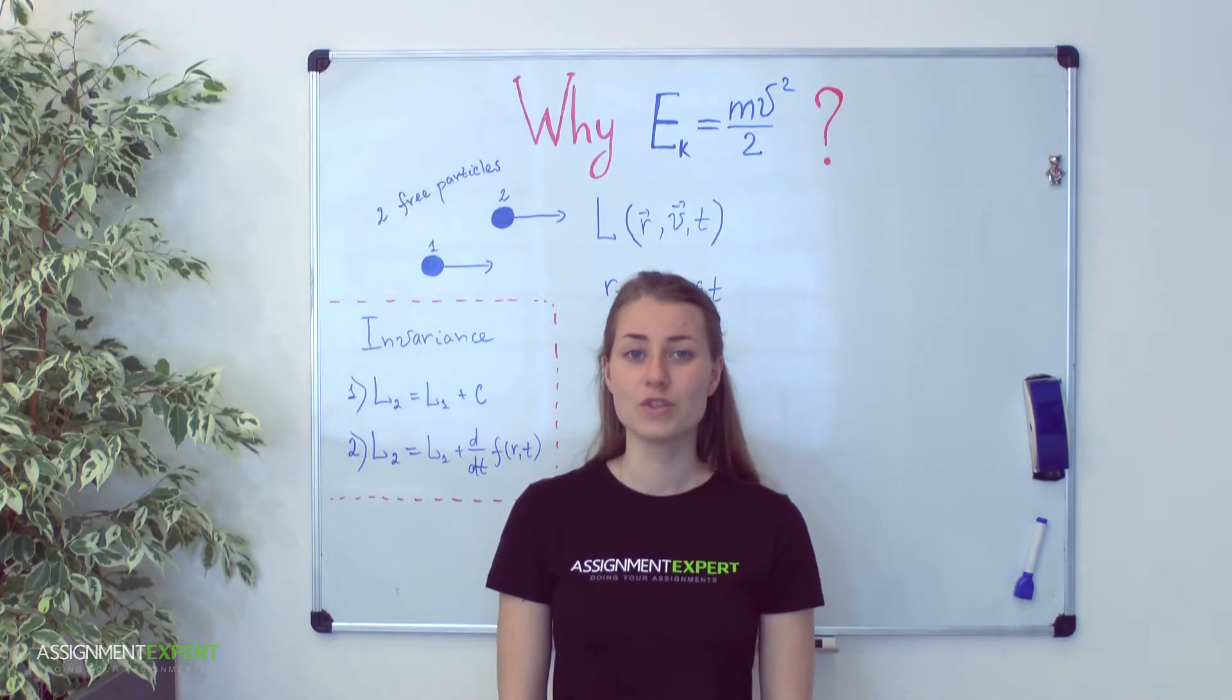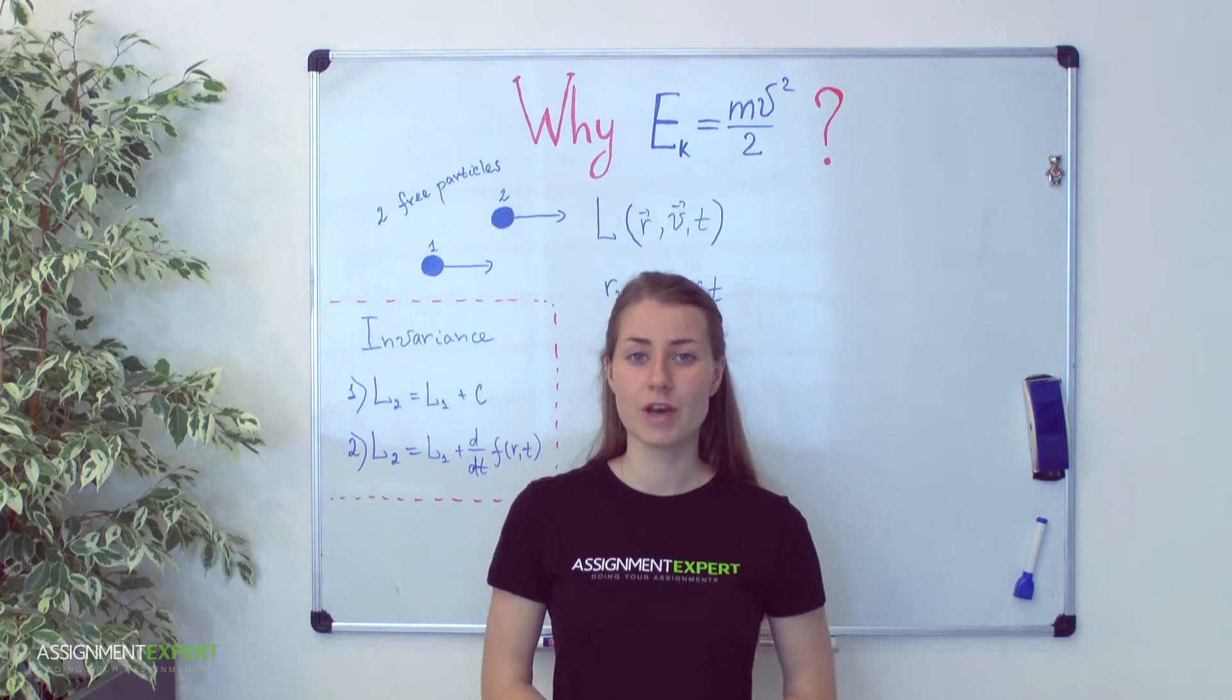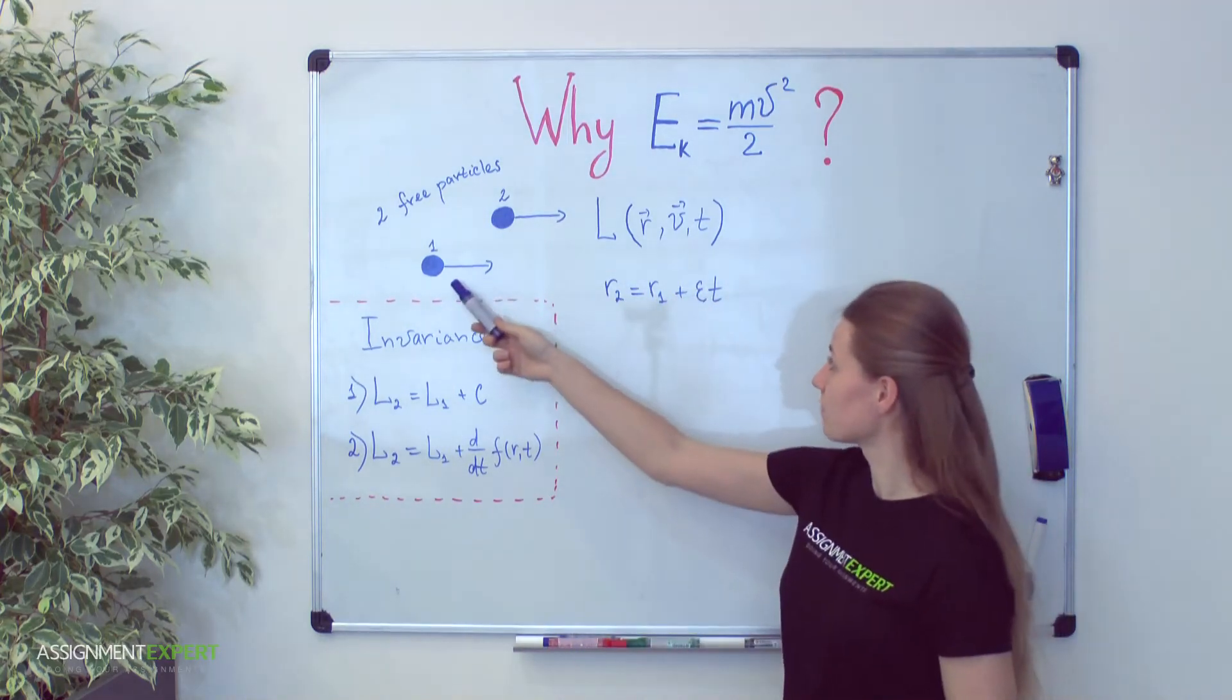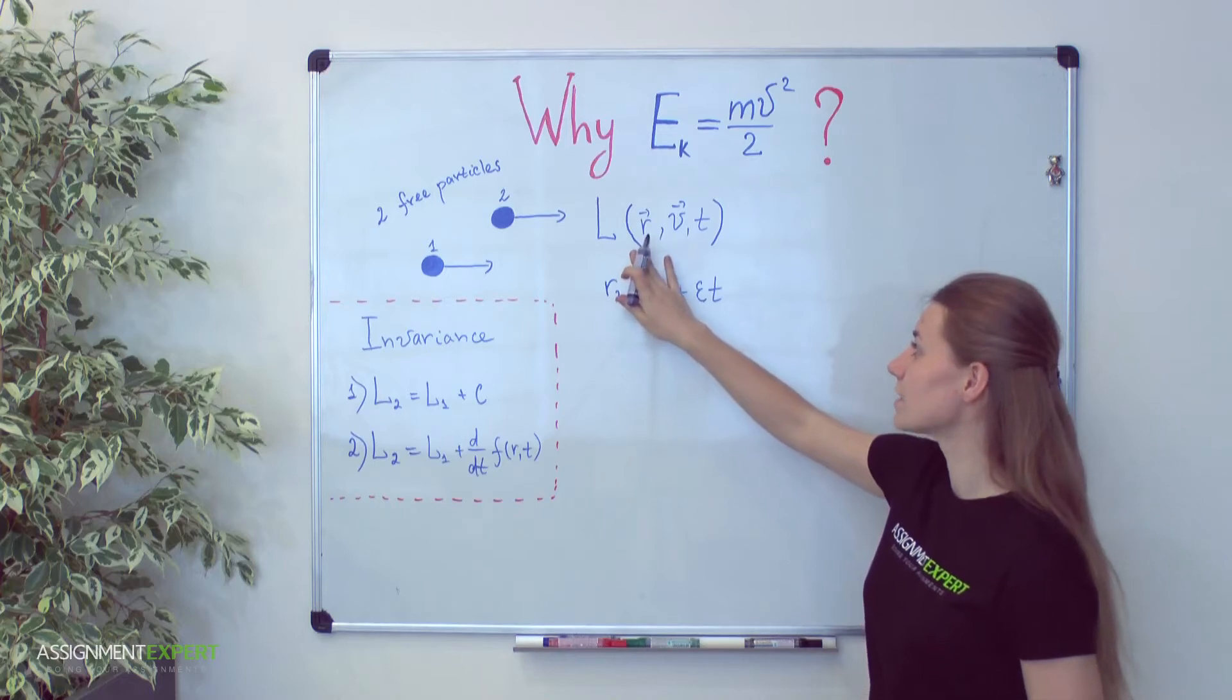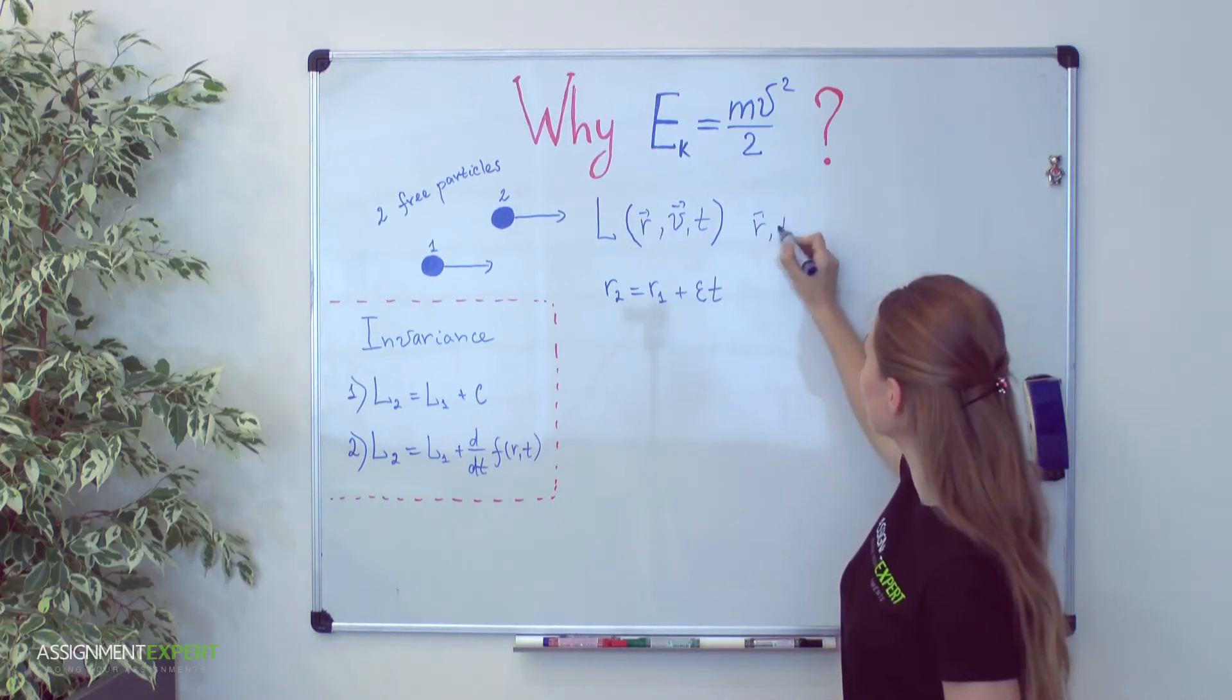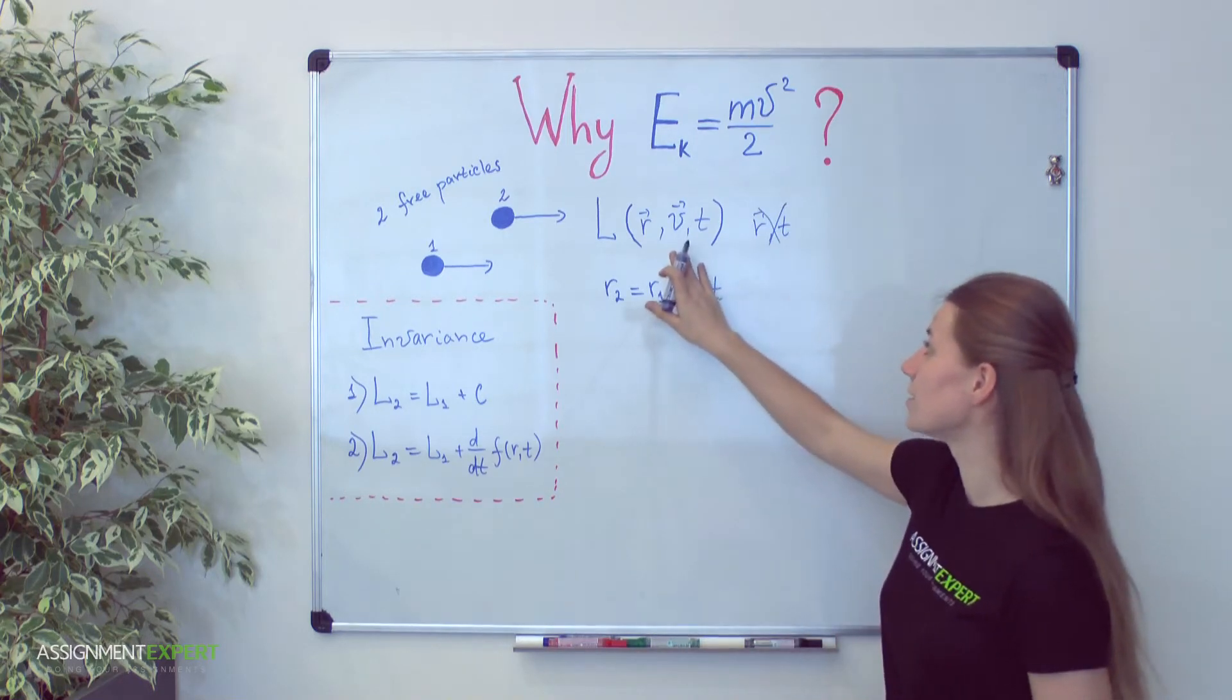Finally we have introduced all the needed mass stuff. Now let's see how the kinetic energy appears in physics. Consider motion of two free particles and let's construct a Lagrange function for all of them. According to homogeneity of our space Lagrange function cannot depend on radius vector r nor on time t. The only dependent which remains is velocity.